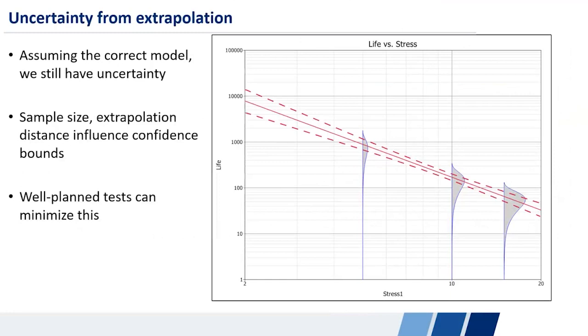And the key thing here is that the distance that we extrapolate, if we're extrapolating really far away from where we tested, we have more uncertainty in our end results. So we introduce more uncertainty, the further we have to extrapolate. On the other hand, the less we extrapolate, the closer we are to the use condition and the fewer failures we have, which increases the uncertainty as well. So a well-planned test can try to minimize that uncertainty.